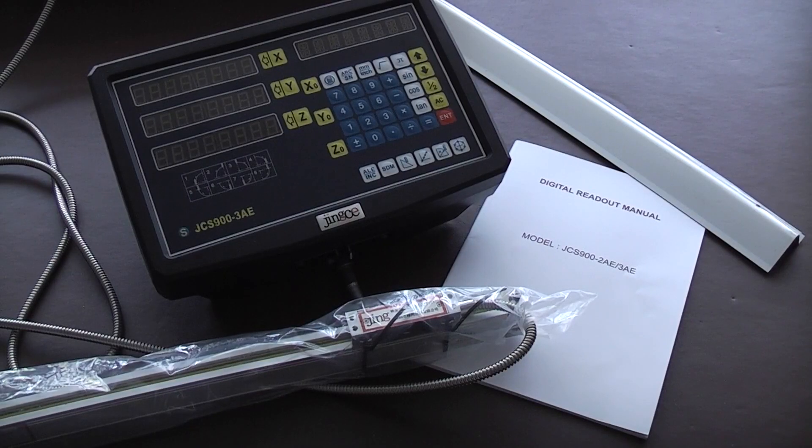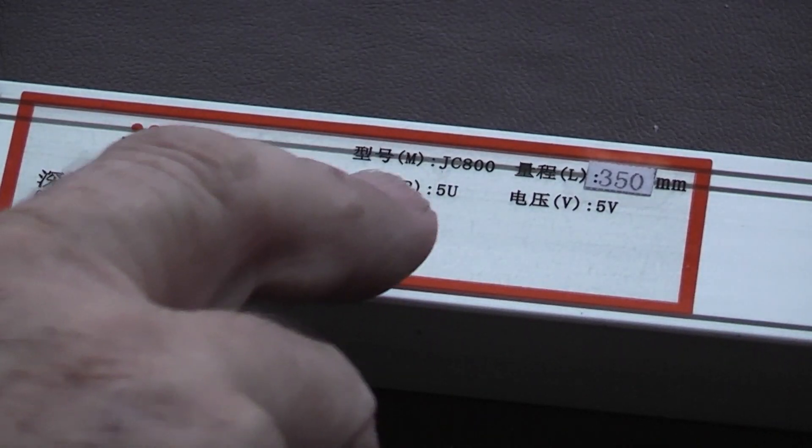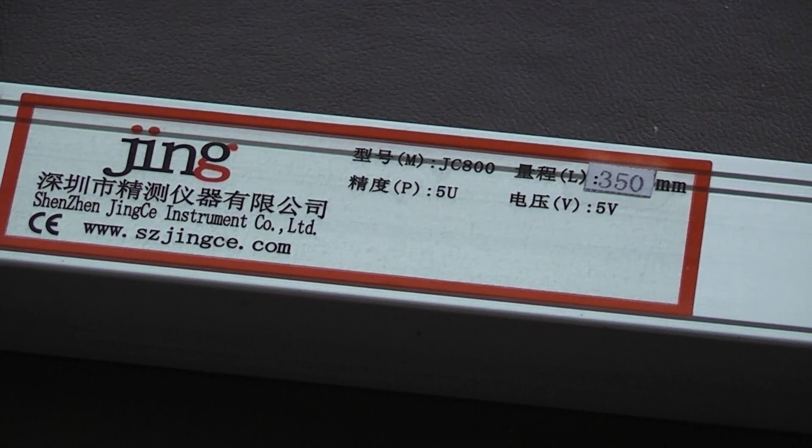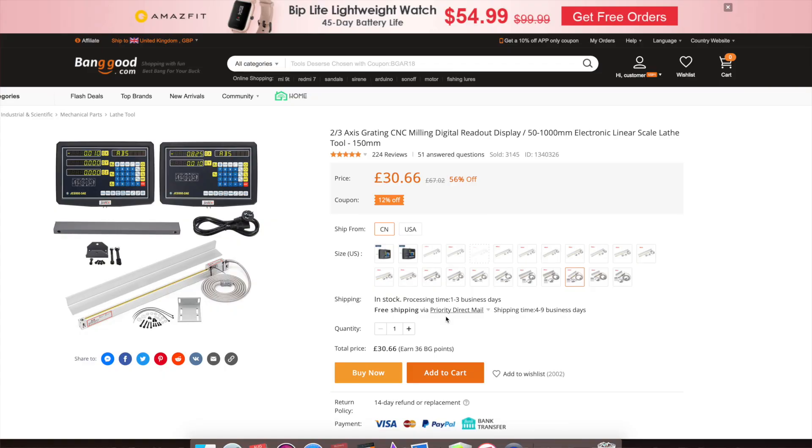With the help of Banggood I've been given a set of glass scales and a display free of charge so I can test and review the product. I can show you how they work and how to measure the scale size you need for your machine, how to order on the internet and check your order. We also see what you get in the kit.